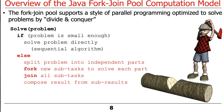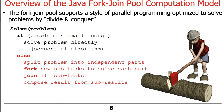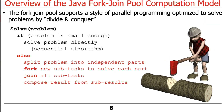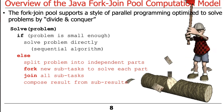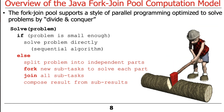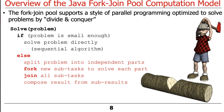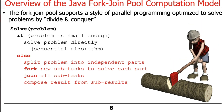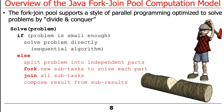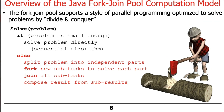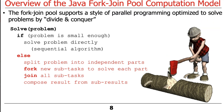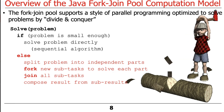If the problem is bigger than some predefined limit, then split the problem into two or more independent parts. Fork new subtasks to solve each of those parts. Then join all the subtasks together and create a composite result from the various subresults. That's the quick summary of how divide-and-conquer works in general, and more specifically how it's applied in the context of the ForkJoin Framework.